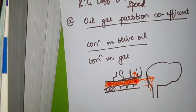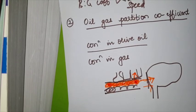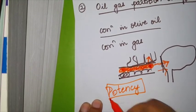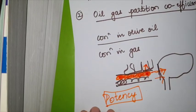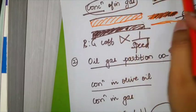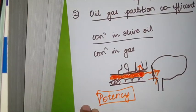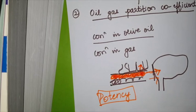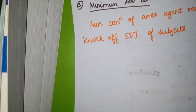So oil-gas partition coefficient is related to the amount of drug required to produce anesthesia. Amount of drug is nothing but potency. So blood-gas partition coefficient helps to determine the speed of the drug, and the extended concept of this oil-gas partition coefficient is MAC — that is, minimum alveolar concentration.